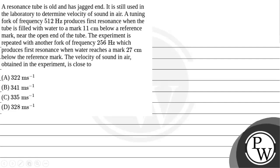Let's read the given question. The question states that a resonance tube is old and has jagged end. It is still used in the laboratory to determine the velocity of sound in air. A tuning fork of frequency 512 Hertz